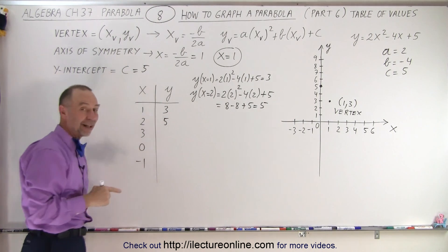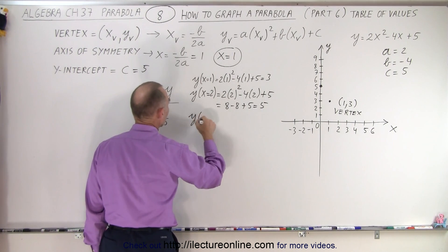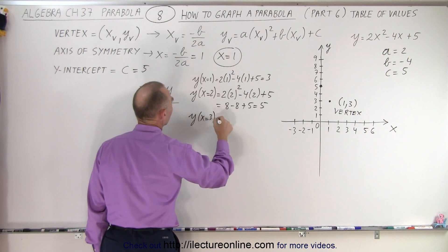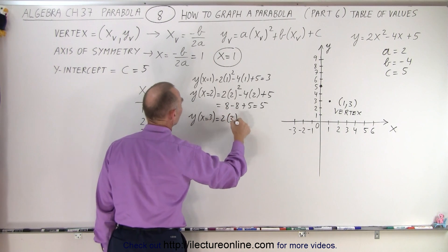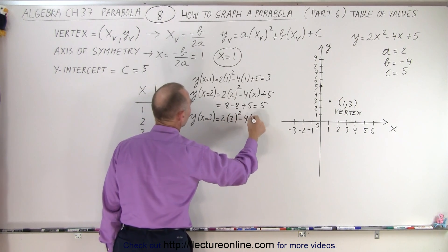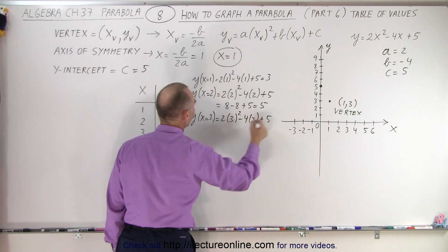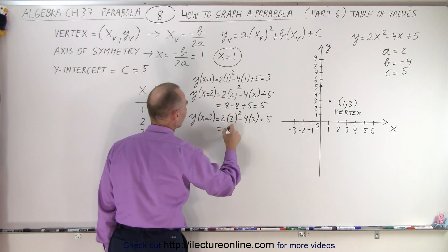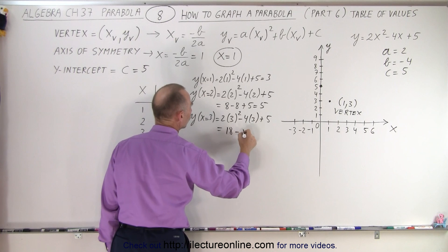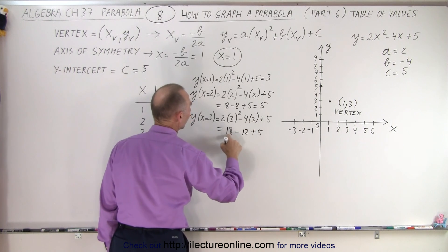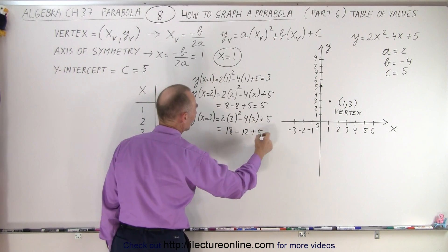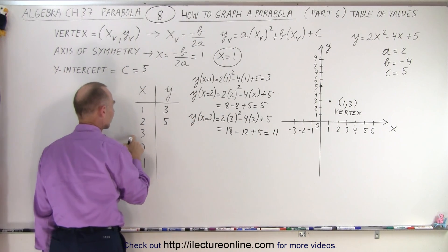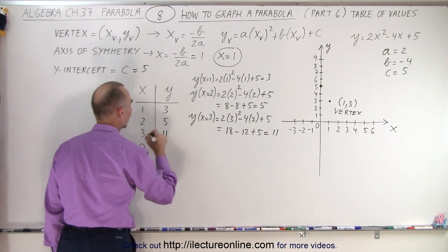Then we plug in the value when x equals 3. So y, when x equals 3, is equal to 2 times 3 squared minus 4 times 3 plus 5. So this is 9 times 2, which is 18 minus 12 plus 5. 18 minus 12 is 6 plus 5, which equals 11. So when x equals 3, y is equal to 11.